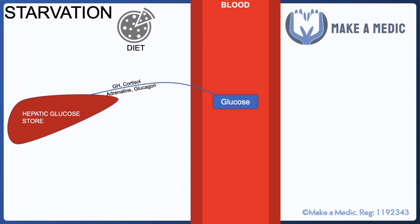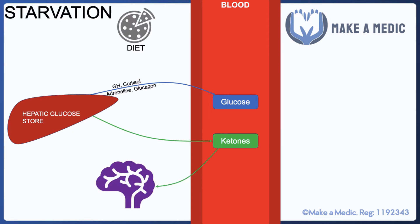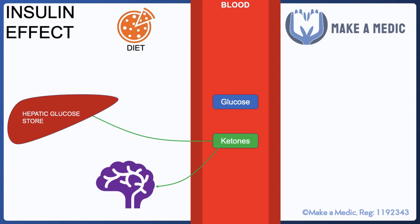The brain, however, is a problem in this state because it's unable to use fatty acids directly as an energy source. Instead, the liver needs to produce ketones via the breakdown of fatty acids before the brain can use them as an energy source. This may be okay in the short term, but it can cause major problems if ketones accumulate in excess.